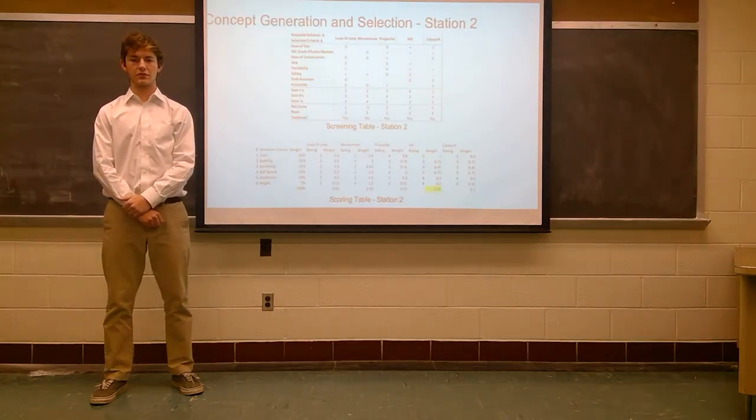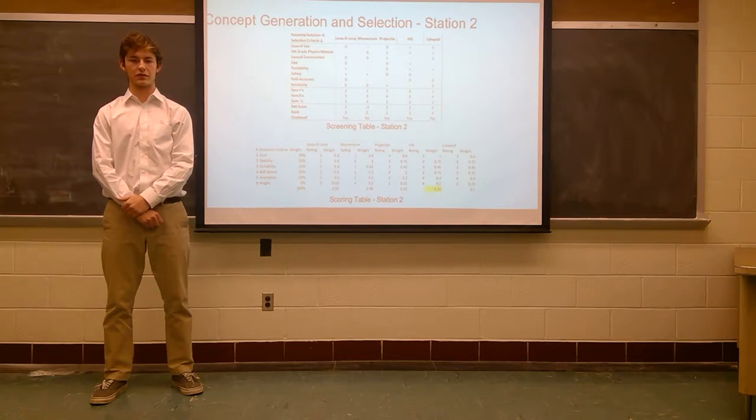Station two went through a similar process to optimize the station's adjustment of the fifth grade physics concepts of gravity. When the team moved on to the scoring exercise, the design with the highest score of 3.55 was the hill. The hill was chosen as the team's final solution for its most optimal display of the concept of gravity. Initial speed allows the ball to make it over to the other side.